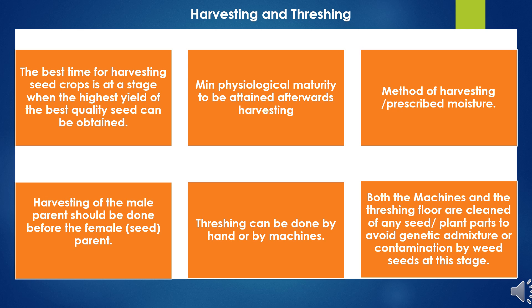At the end stage of hybrid seed production, harvesting and threshing play an important role in maintaining physical and genetic purity. The best time for harvesting seed crops is when the highest yield of best quality seeds can be obtained — when the crop attains minimum physiological maturity. This ensures germination, viability, and vigor of the produced seed. Harvesting can be done manually or by machine at the appropriate stage and prescribed moisture content.